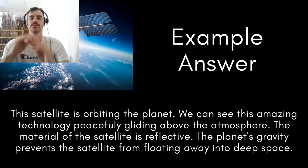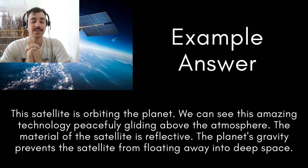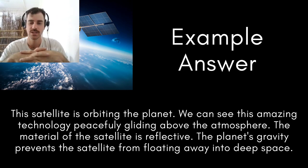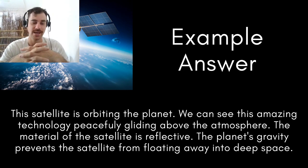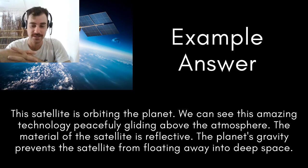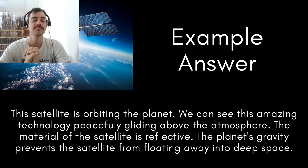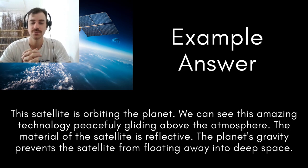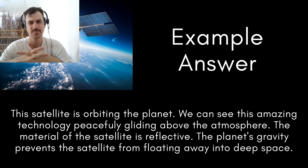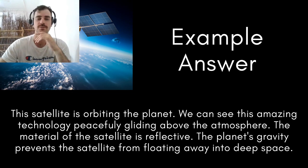Let's look at the example: This satellite is orbiting the planet. We can see this amazing technology peacefully gliding above the atmosphere. The material of the satellite is reflective. The planet's gravity prevents the satellite from floating away into deep space. That's an example of how you can use those words to describe this picture in a simple, straightforward way.